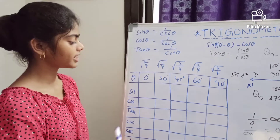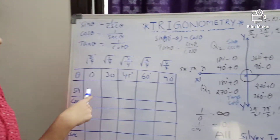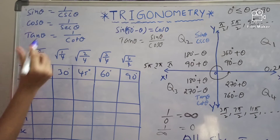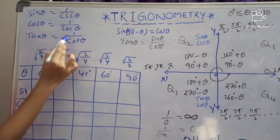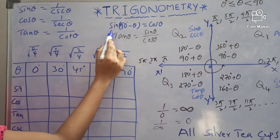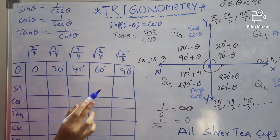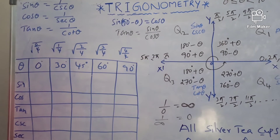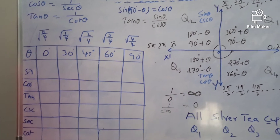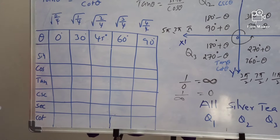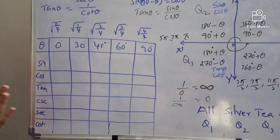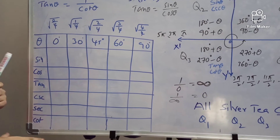Welcome to part 8. Today we are going to learn about the values of trigonometry ratios. Before that, recall: sin θ = 1/cosec θ, cos θ = 1/sec θ, tan θ = 1/cot θ, sin(90° − θ) = cos θ, tan θ = sin θ/cos θ, and 1/0 = infinity, 1/infinity = 0. This is the shortcut method so you can easily learn the values of all 6 trigonometric ratios.